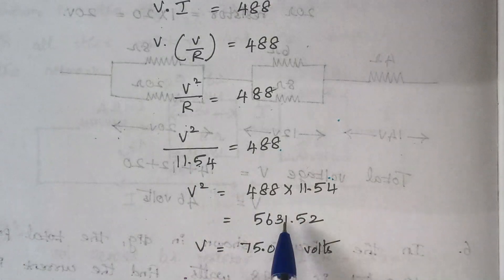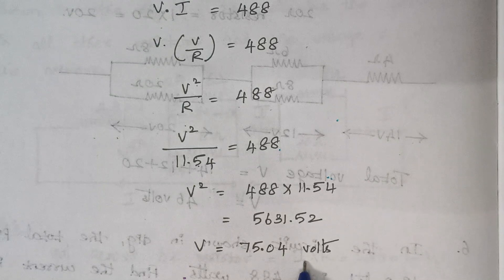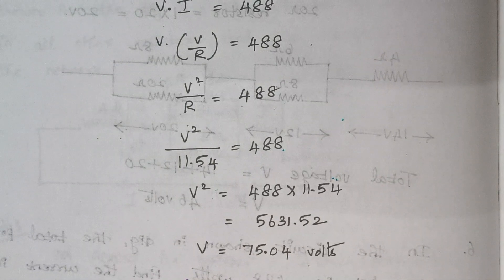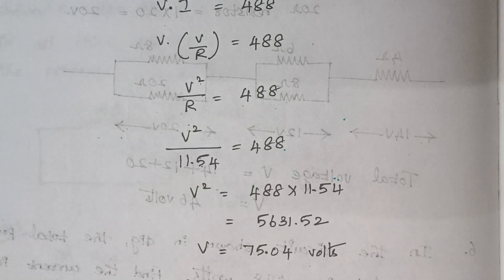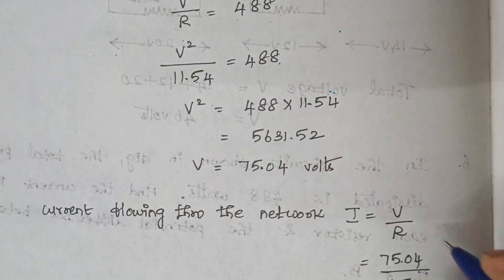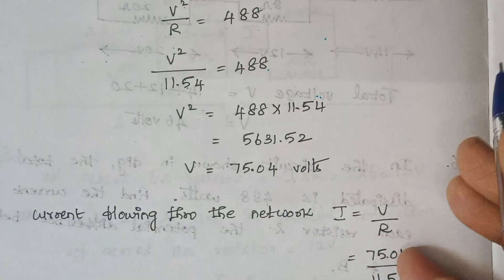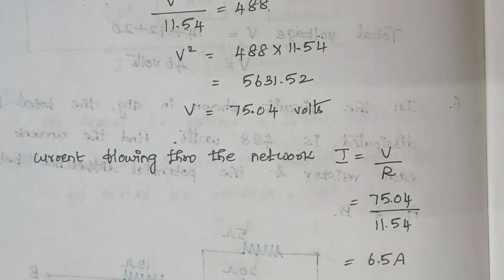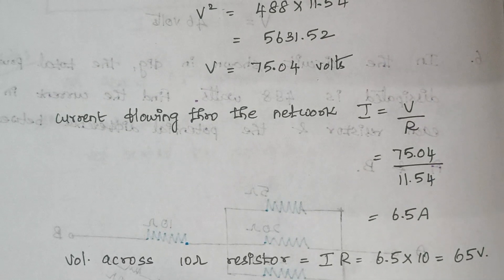We know V squared — just take the square root and we will have the value of V. So the total voltage is calculated. The next thing is we are going to calculate the value of current by Ohm's law. Again, I is given by V by R. We have calculated V and we already know the value of R. Just substitute it and the value of current is found out to be 6.5 amps.